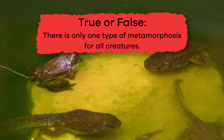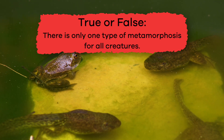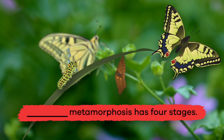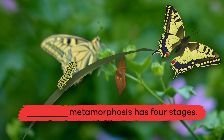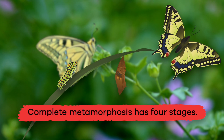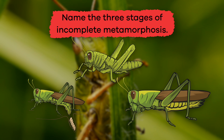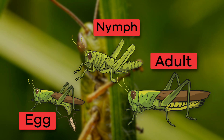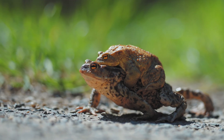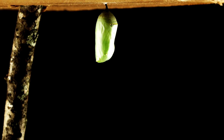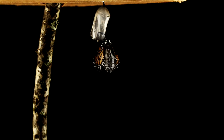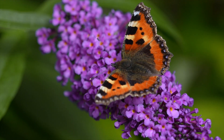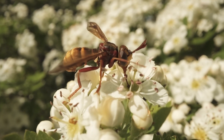Let's review! True or false: there is only one type of metamorphosis for all creatures. False! Fill in the blank: blank metamorphosis has four stages. Complete! Name the three stages of incomplete metamorphosis: egg, nymph, and adult. Fabulous job, metamorphosis mavens! Metamorphosis is a vital process that helps species adapt and survive to adulthood. The next time you see a caterpillar or a tadpole, you can remember the stages of metamorphosis and know what comes next in their life cycles.